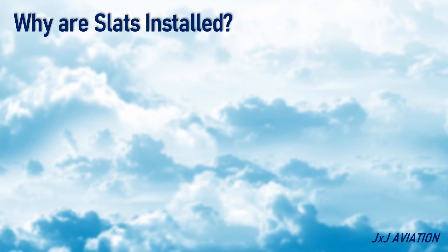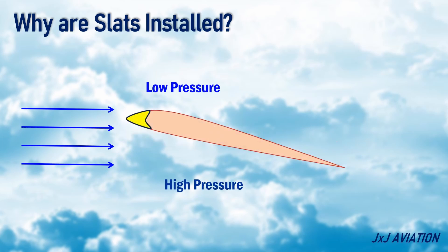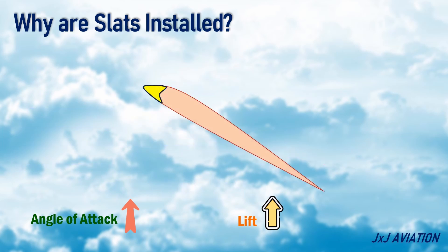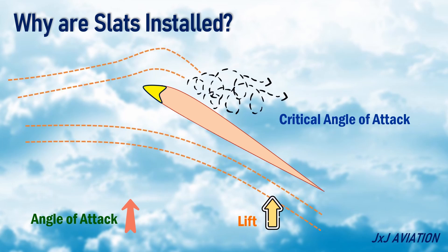Why are slats installed? First, let's consider the slats are retracted completely and are flush with the wing surface. The wings generate lift by creating a pressure difference over the top and bottom surface of the wing. When the angle of attack is increased, the lift also increases. Angle of attack is the angle between the cord line and the oncoming wind. If the angle of attack is increased, it reaches an angle called the critical angle of attack. Beyond this angle, the flow separates from the top surface of the wing, causing the aircraft to stall, which means there is a sudden, drastic decrease in the lift.